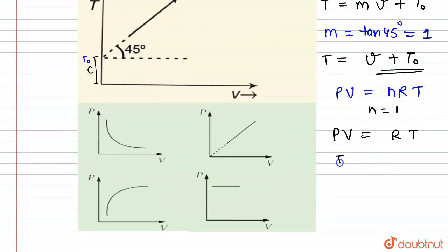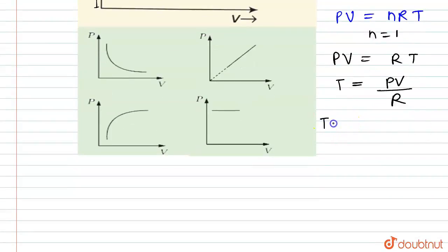Or you can write that T equals PV/R. Now put the value of T, which is V plus T₀, in this equation. We can write that V plus T₀ equals PV/R, right.